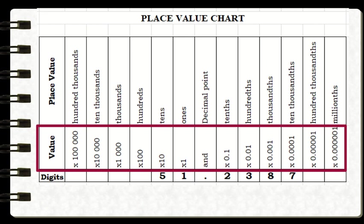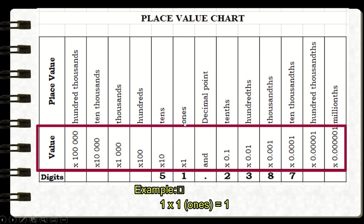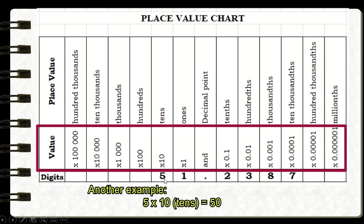In this part of the chart we can see the different place values that a certain digit occupies, and here we can see the corresponding value of each place value. To get the value of a digit, we simply multiply the digit with its corresponding place value. For example, to get the value of 1 since it occupies the ones place, we multiply 1 by one, which equals 1. To get the value of 5 since it occupies the tens place, we multiply 5 by ten, which equals 50.